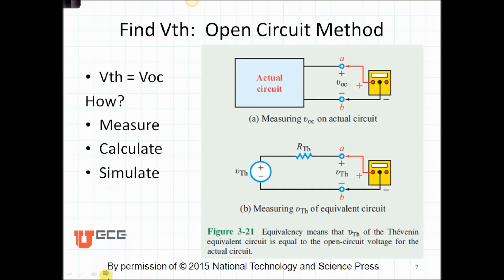In order to find the VThevenin, the first thing we do is what's called the open circuit method. We remove the loads and we open circuit the actual circuit, and we measure, calculate, or simulate the voltage between points A and B. That's called the open circuit voltage. So similarly, as soon as we measured that open circuit voltage, we can see that VTH is equal to VOC. Again, we can measure, calculate, or simulate this.